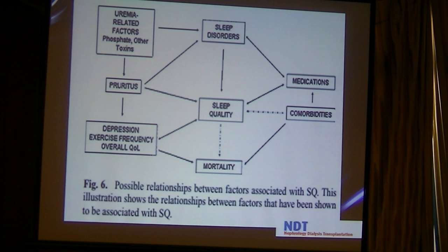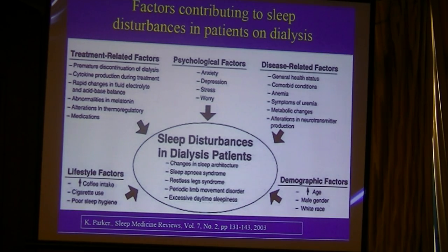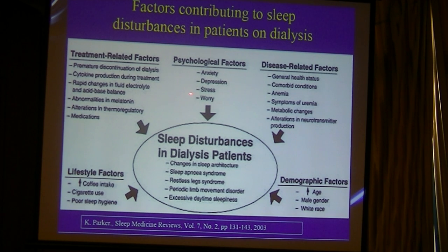Sleep disorder by itself leads to disturbed sleep quality, which leads to increased mortality. Uremia-related factors such as depression, exercise frequency, and overall quality of life all contribute to disturbed sleep quality. Additional contributing factors in dialysis patients include treatment-related dysfunction, premature discontinuation of dialysis, psychological factors, disease factors like anemia and symptoms of uremia, metabolic changes, and demographics such as male gender and white race, as well as lifestyle factors like caffeine and smoking.